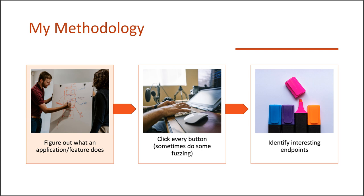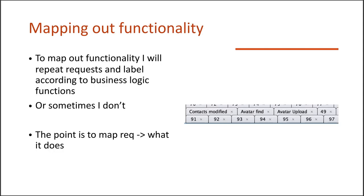Step one: figure out what an application feature does — that high-level business logic overview. Practically, I'm going to be sitting there using Burp Suite's repeater and labeling things. I'll say: that's how I find the avatar, this is how I upload the avatar, this is when I modify a contact. I'll start to label these tabs to describe what they do business-wise, because seeing request numbers 91, 92, 93, 94 is not that helpful. If I label that a request uploads an avatar or finds the avatar for a specific user ID, I have a general idea of the functionality.